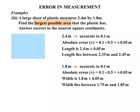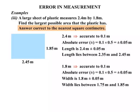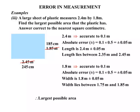To find the largest possible area, we choose the highest limits: 2.45 metres for the length and 1.85 metres for the width. Since we need the answer to the nearest square centimetre, we convert to centimetres. The largest possible area equals 245 centimetres by 185 centimetres, which works out to be 45,325 square centimetres.